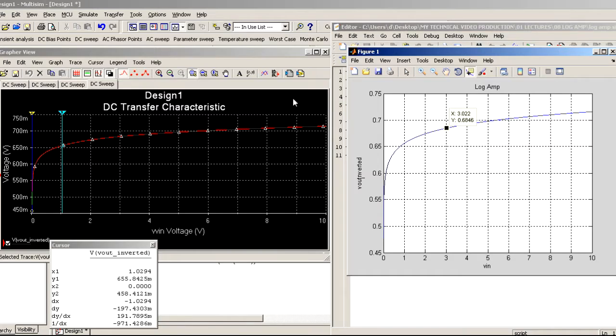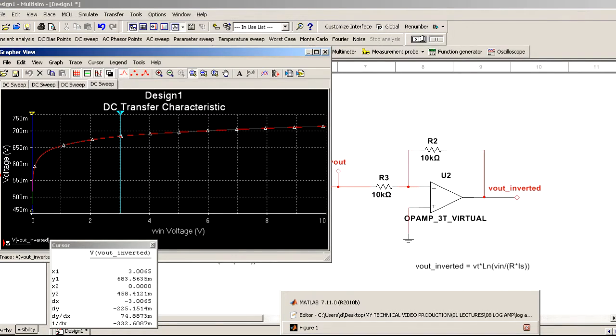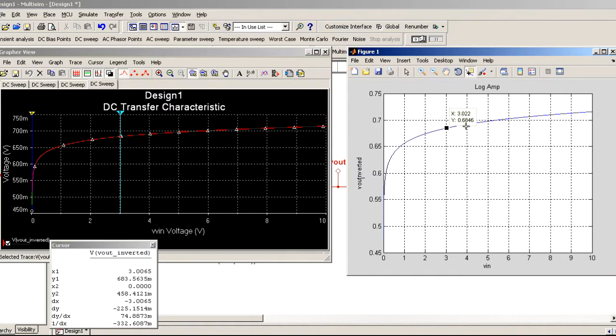And so we'll go up to about 3 volts for our VN. See what we get. So at about 3 volts, we have 683 millivolts output. And on our mathematical function, we have 684 millivolts as an output. Still very high accuracy.